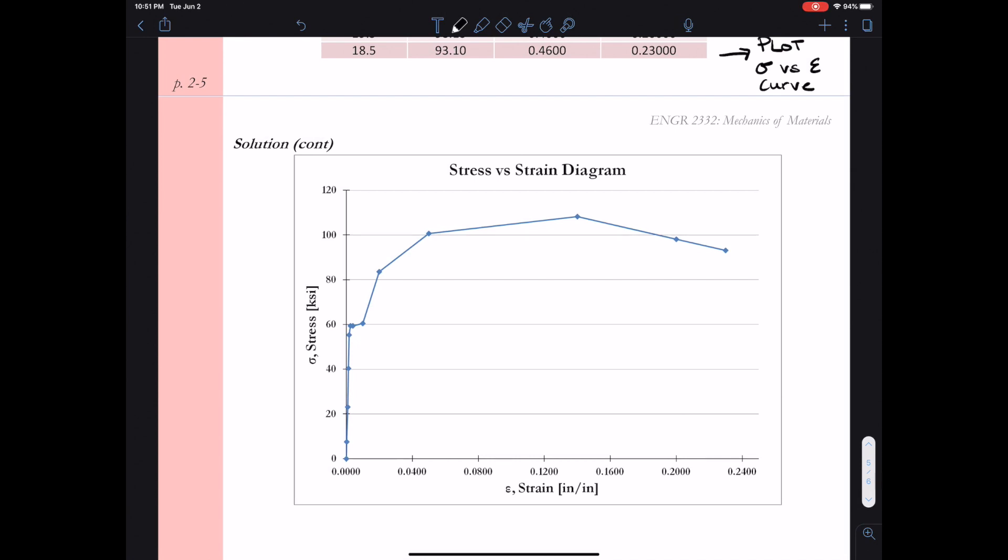If we look on to task B, task B asks us to identify or label the four regions of the stress strain curve. So remember what our four regions are. We have the linear elastic region, the yield plateau, the strain hardening region, and lastly, the necking region.